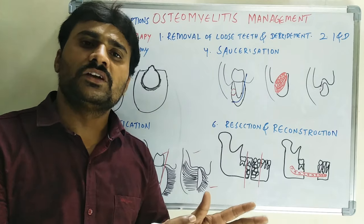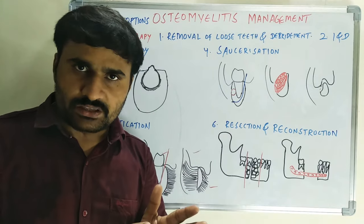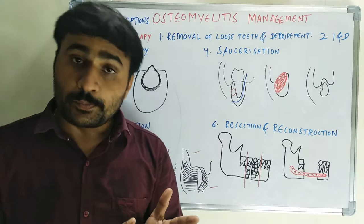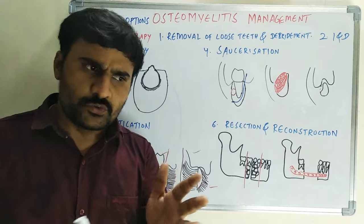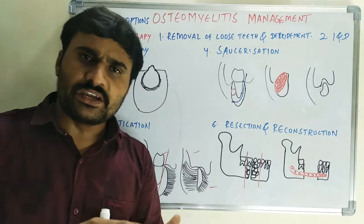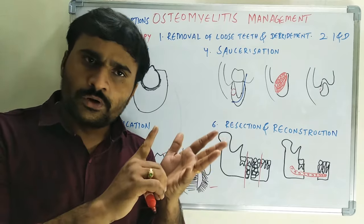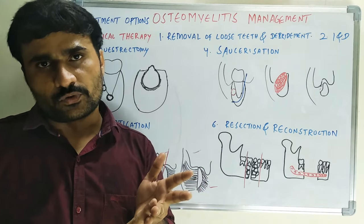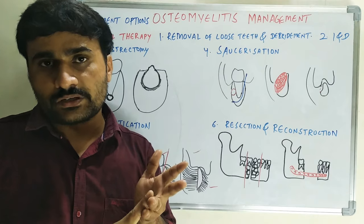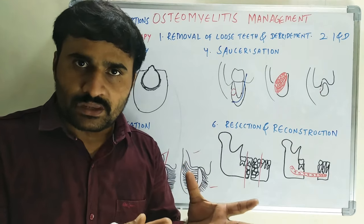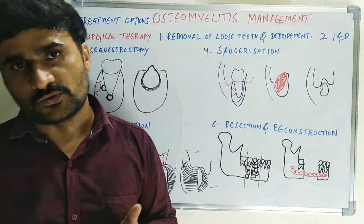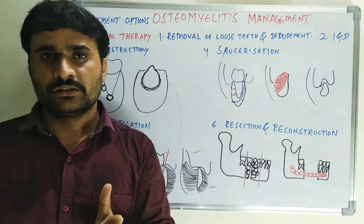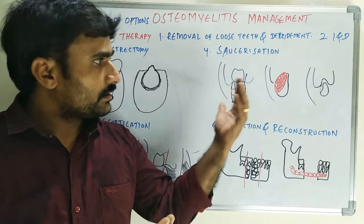The fourth option is supporting therapies. These include analgesics for pain control — NSAIDs or opiates if the pain is severe — and nutritional support with high vitamin and protein supply, ensuring a good diet for quicker healing.